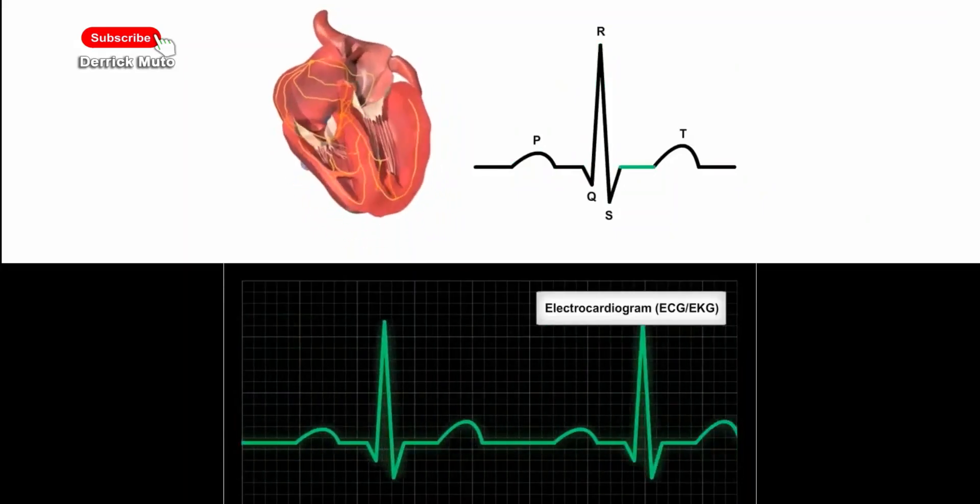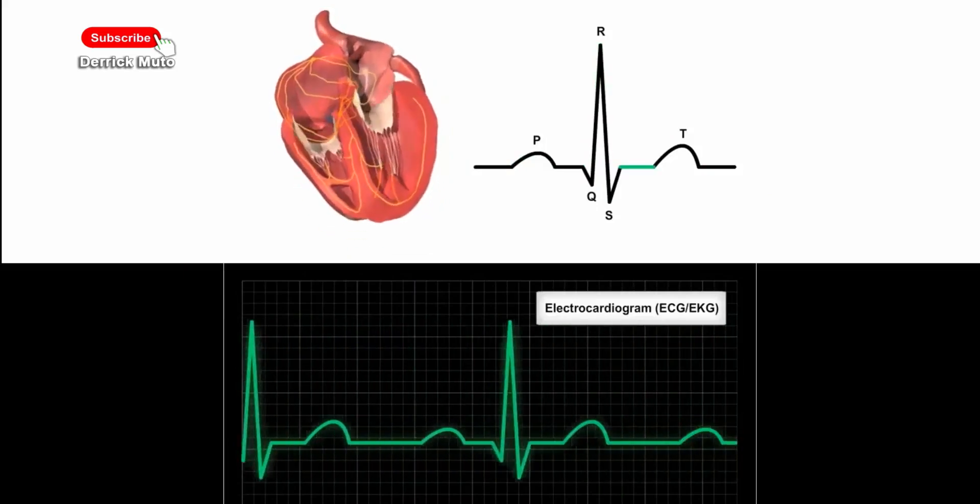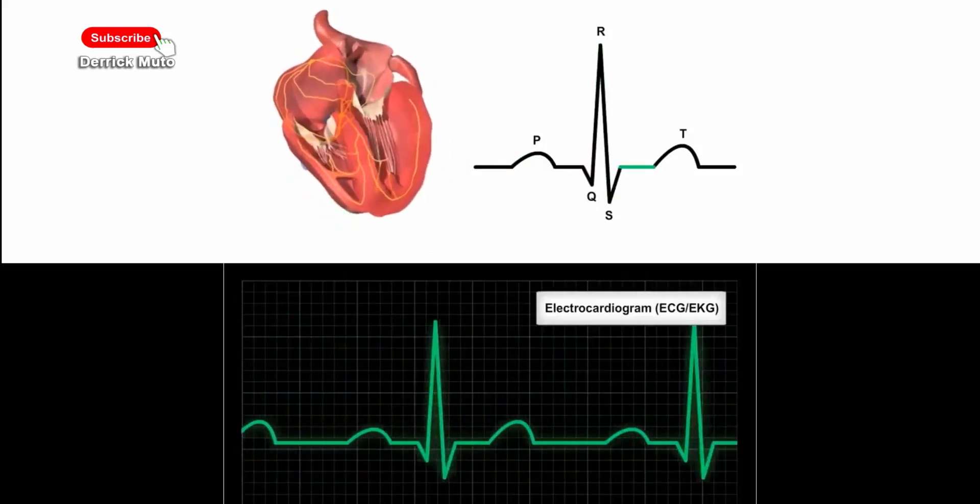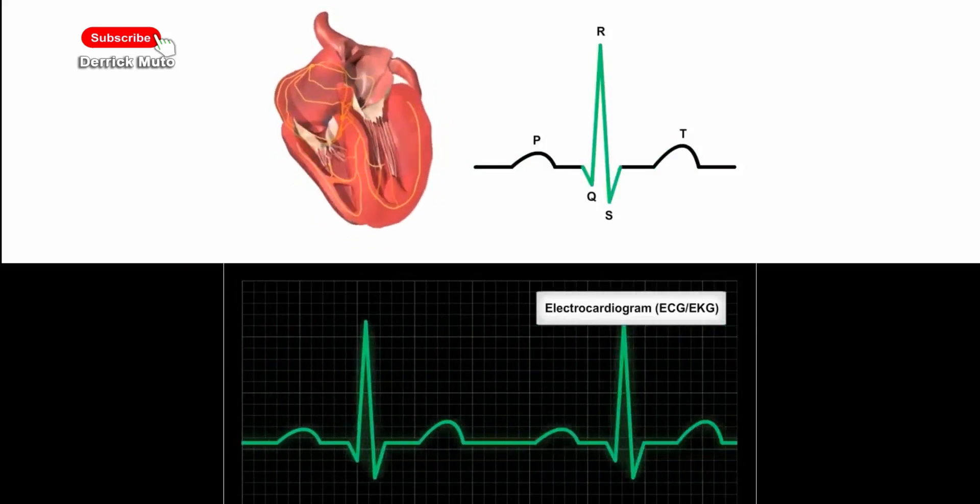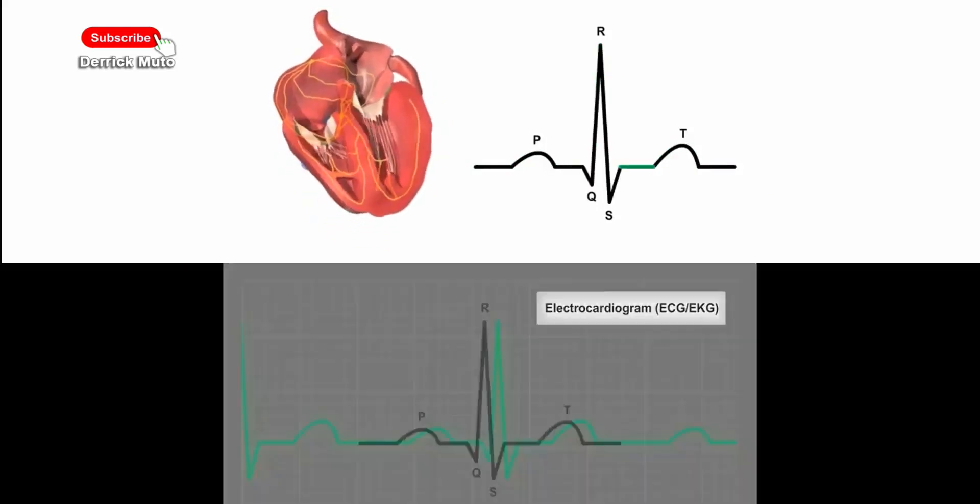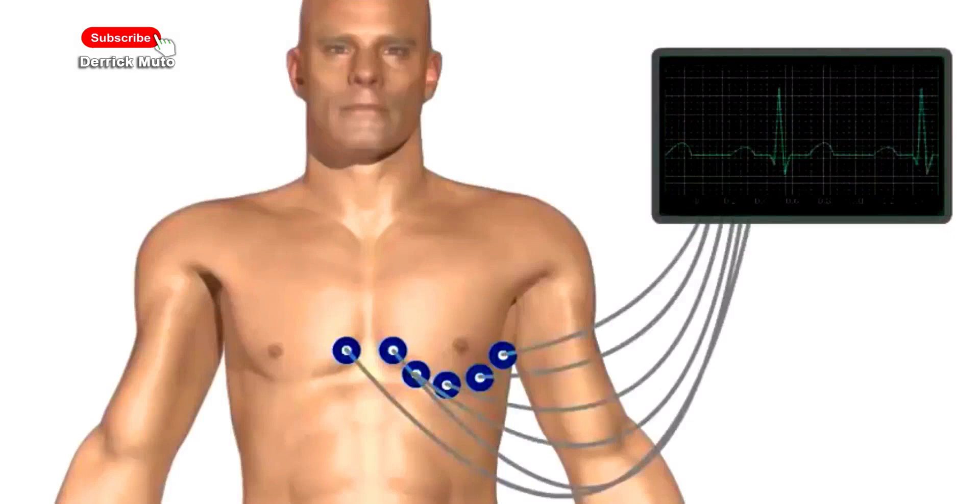An electrocardiogram records the electrical signals from your heart to check for different heart conditions. The signals are shown as waves on an attached computer monitor or printer.